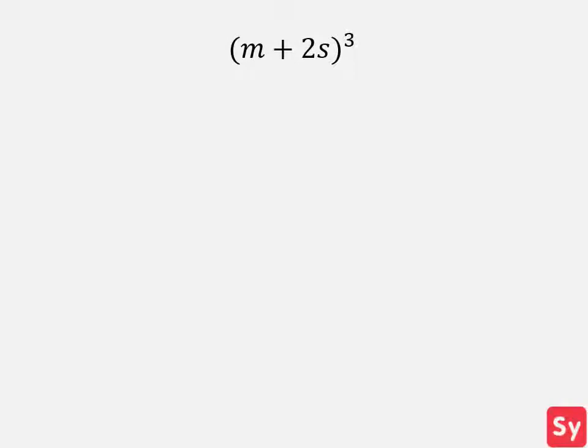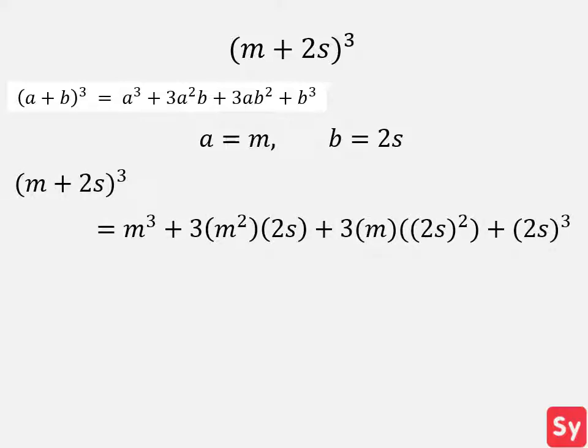Last example, we have m plus 2s cubed. We take a look at the perfect cube identity. We can see that a equals m and b equals 2s in this case. We then plug these values into the identity. Next, we simplify and get m plus 2s cubed equals m cubed plus 6m squared s plus 12ms squared plus 8s cubed, which is our answer.